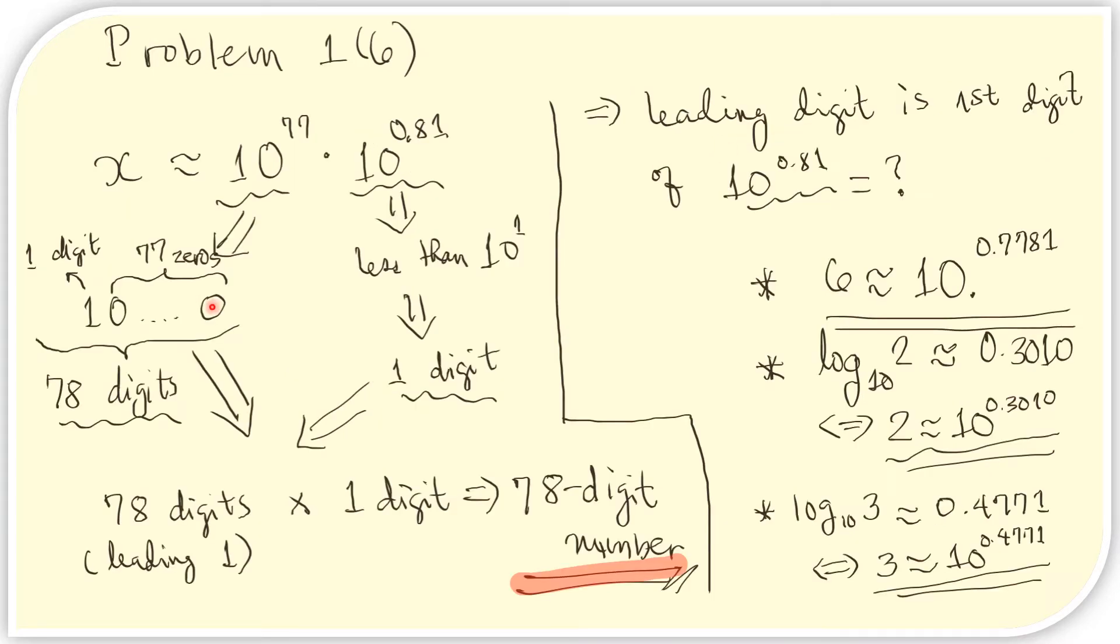We are interested in knowing the number of digits in x. That is the same as the number of digits in this number. First we look at the first factor here. This number has 77 zeros after a 1 and therefore it has 78 digits. This number must be less than 10 because the exponent is less than 1.